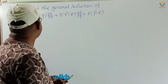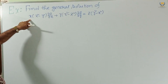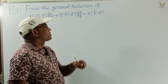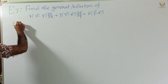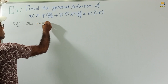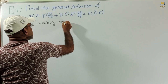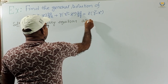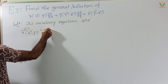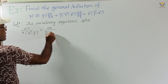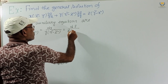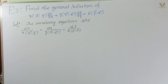Consider the problem: find a general solution of x(z²-y²) ∂z/∂x + y(x²-z²) ∂z/∂y = z(y²-x²). The auxiliary equations are dx / [x(z²-y²)] = dy / [y(x²-z²)] = dz / [z(y²-x²)].